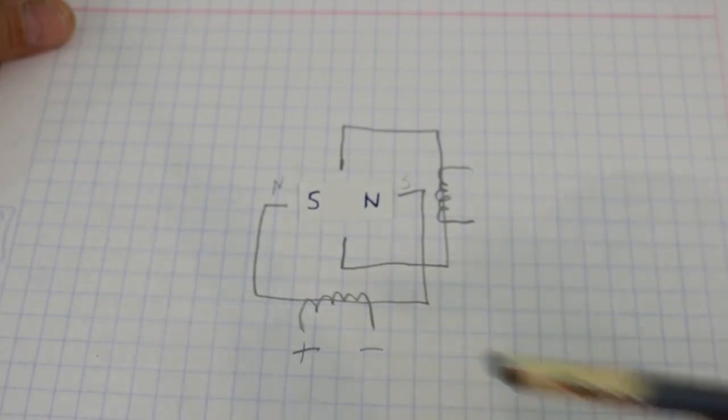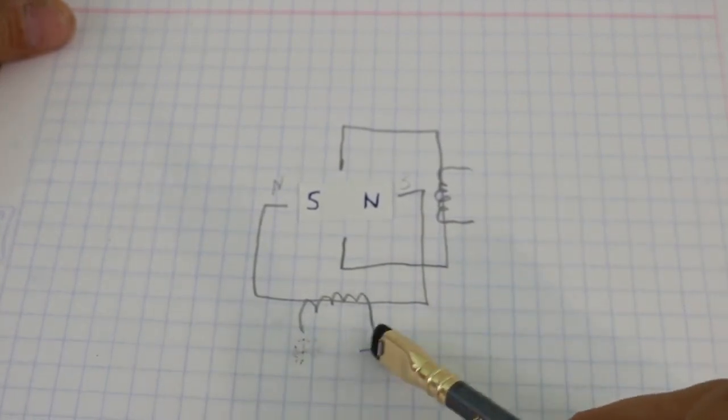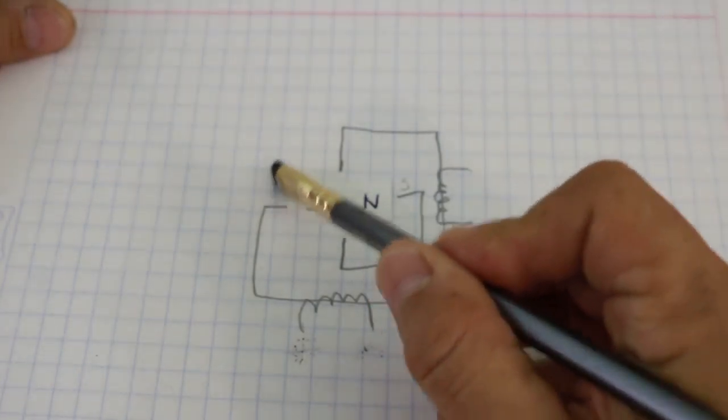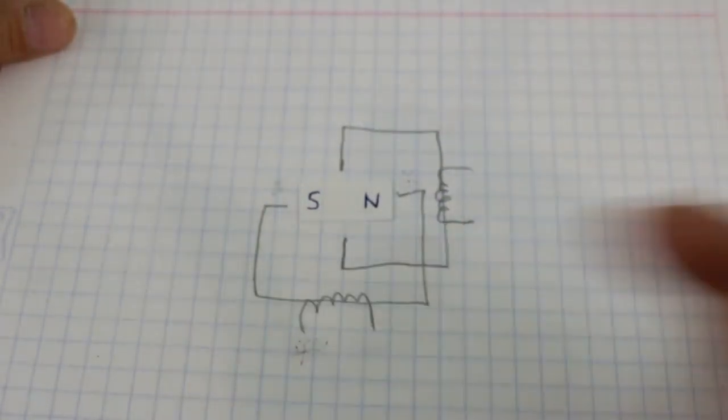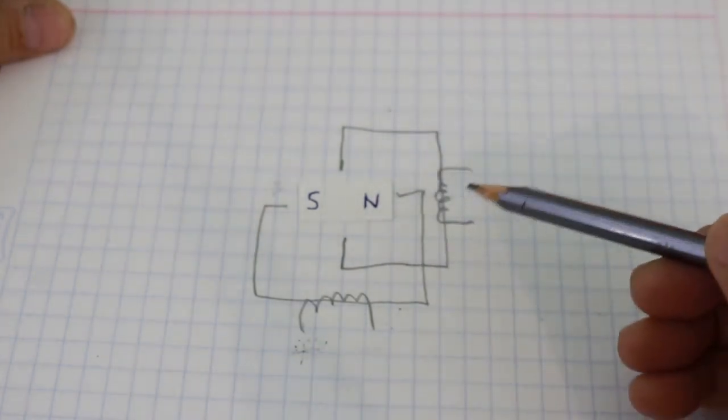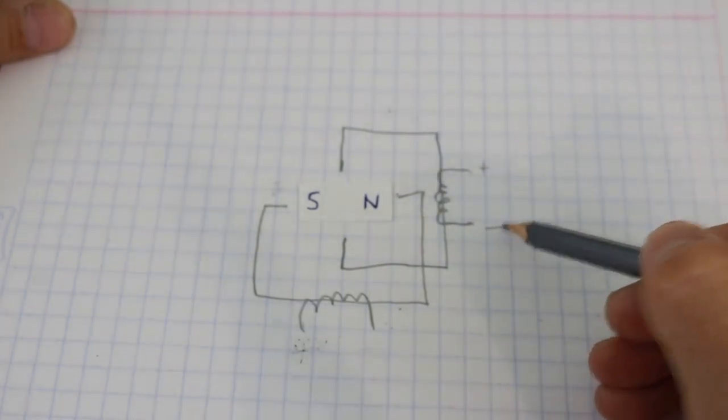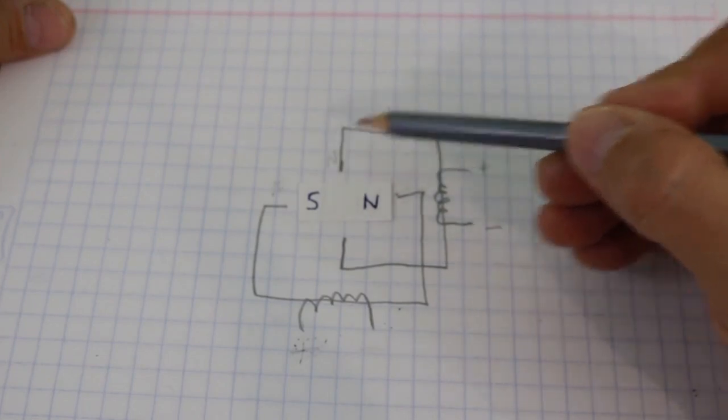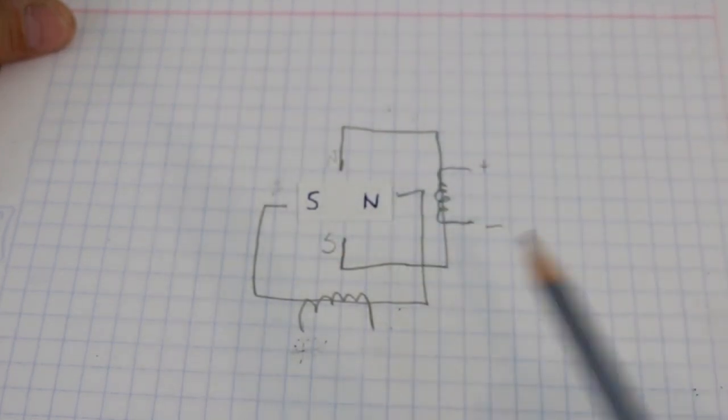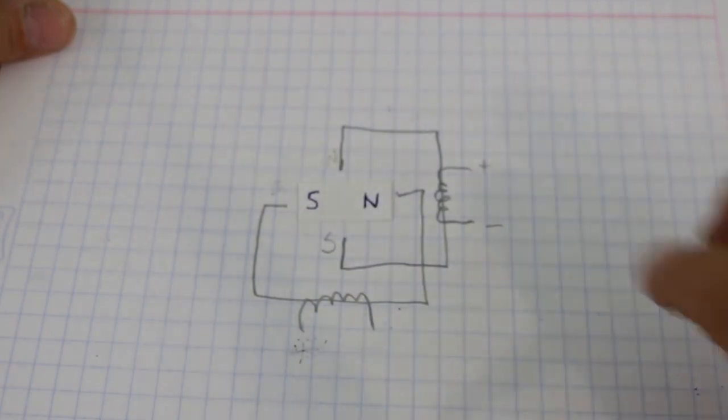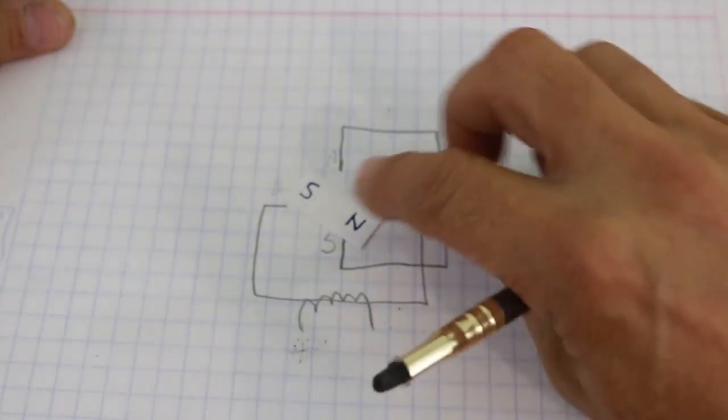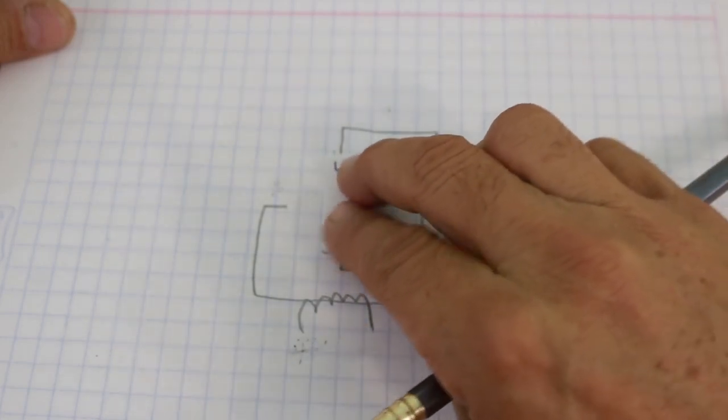Now we disconnect the power from this coil, this magnetic field disappears, and now we apply voltage to the other coil, positive, negative. So here now we have north and south. This south wants to align with this north and the rotor rotates a quarter of a revolution.